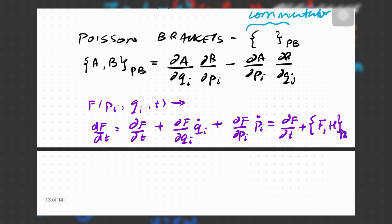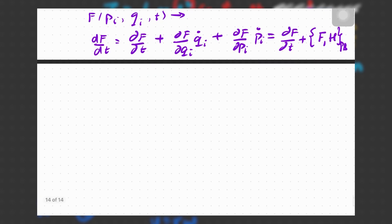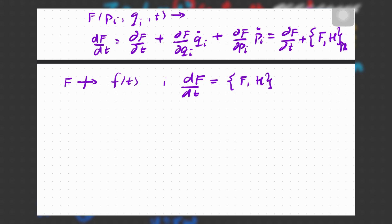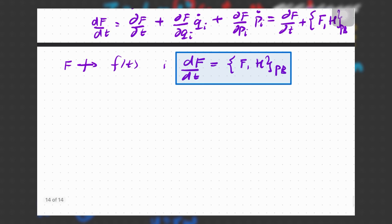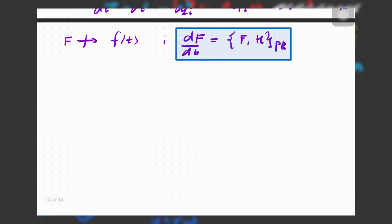If F is no longer an explicit function of time, then the rate of change of F simply comes out to be the Poisson bracket of F with the Hamiltonian. This is really interesting — to find how any quantity changes, all you need is the Poisson bracket relationship of that quantity F with the Hamiltonian.